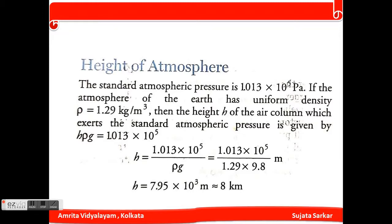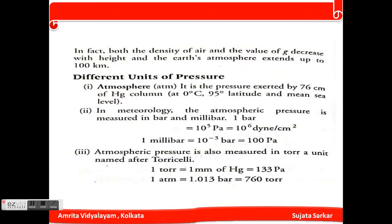The value of h equals 7.95 × 10³ meters, which is equivalent to approximately 8 kilometers. Now we have to convert meters into kilometers. The density of air and the value of g decrease with height, and the earth's atmosphere extends up to 100 kilometers.